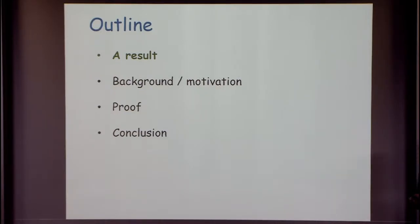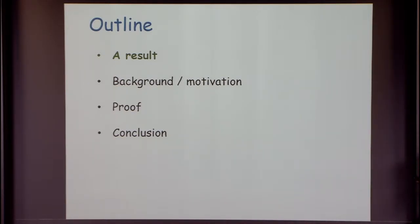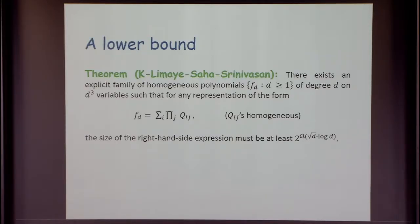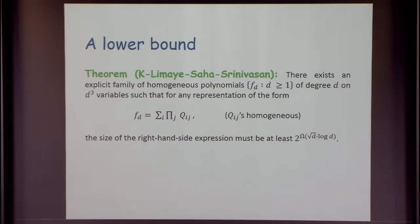Let me begin by stating the specific lower bound result I'll talk about today. I'll then give the background and motivation — the survey part — and then try to give you a full proof. Here's the statement: I'll present an explicit family of polynomials of degree d on d-cubed variables, such that if you write it as a sum of products of homogeneous polynomials, the total size must be at least two to the square root of d times log d — roughly exponential in square root d.